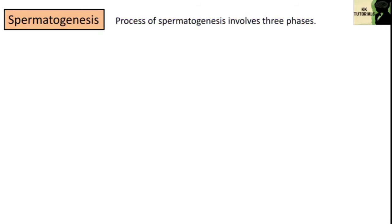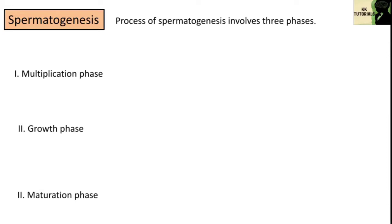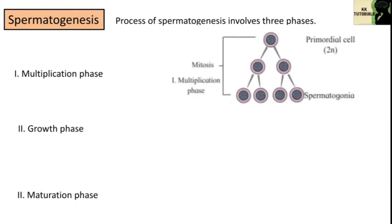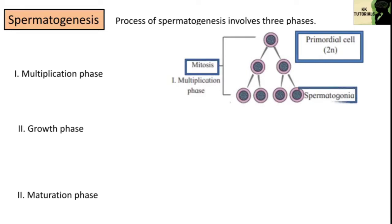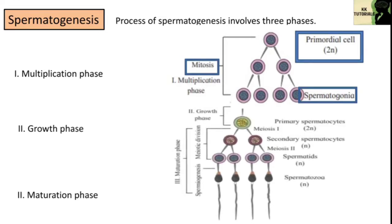The process of spermatogenesis involves three phases: multiplication phase, growth phase, and maturation phase. In the multiplication phase, the primordial cells of seminiferous tubules undergo repeated mitotic divisions to produce a large number of spermatogonia. Each spermatogonium is diploid with 46 chromosomes. In the growth phase, some of the spermatogonia stop dividing and grow in size to develop into primary spermatocytes due to accumulation of food.